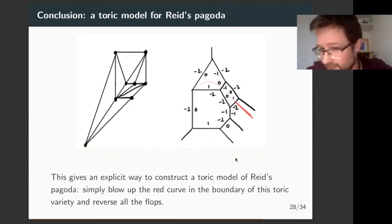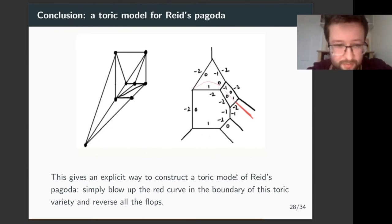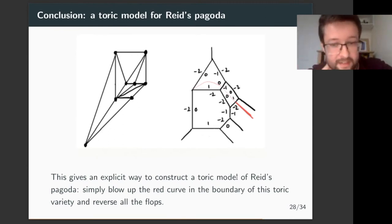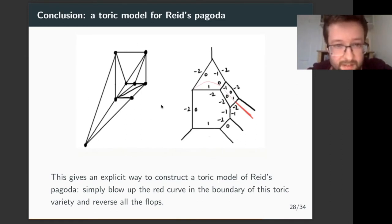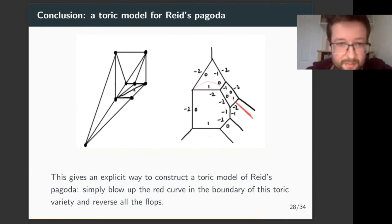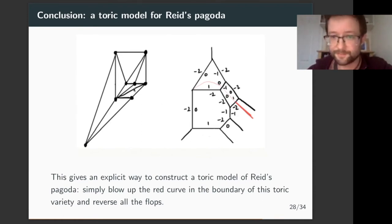This gives me an explicit way to construct a toric model of Reed's pagoda. It is birational to a toric variety that I've just defined — and this graphical process shows you why.